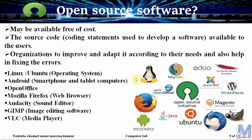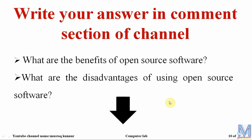These are the symbols of various open source software: Android, Mozilla Firefox, Linux, and Ubuntu. Now, a few questions for our viewers — please write your answers in the comment section: What are the benefits of open source software, and what are the disadvantages of using open source software?